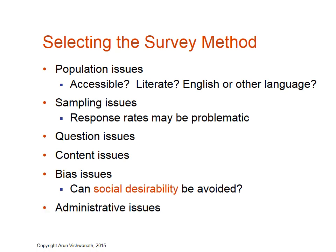Finally, you have administrative issues. These can be everything from do you have the facility to do a telephone survey, do you have an email survey mechanism, and do you have the money to do it — whether that's a mail survey, a drop-off, a focus group, or a telephone survey. All of these together influence the selection of the method that you ultimately use in your study.